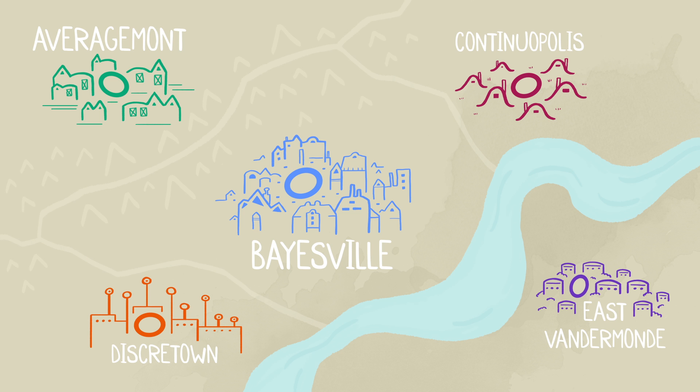Not all of these cities are connected via direct flights to each other. For example, there is a direct flight from Averagemont to Baysville, but not from Averagemont to East Vandermond.